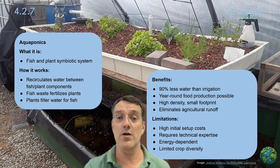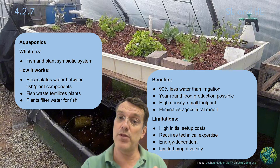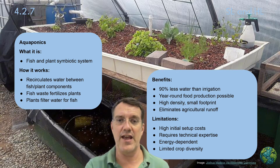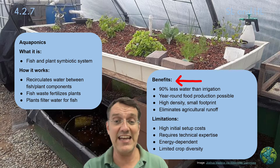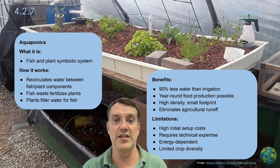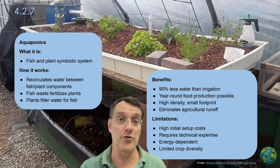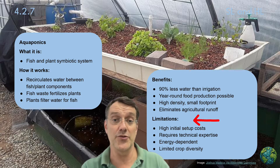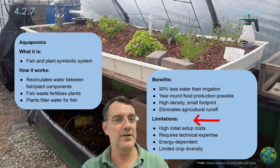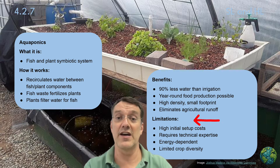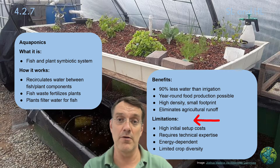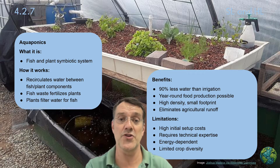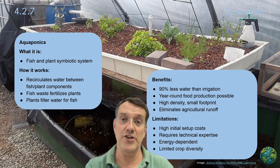Aquaponics represents an innovative water-efficient food production system that integrates fish farming with plant cultivation. The system recirculates water between fish tanks and plant growing beds, with fish waste fertilizing plants while the plants filter water for the fish. Benefits include using about 90 percent less water than conventional irrigation, enabling year-round food production, creating high-density production in small spaces, and eliminating most agricultural runoff. Limitations include high initial setup costs especially at large scale, technical expertise required, energy dependence from pumping water between the two systems, and limited diversity of crops that can be grown. Aquaponics exemplifies a systems-based approach where the inputs of one system are the outputs of another.